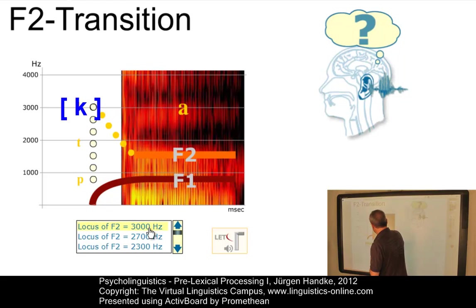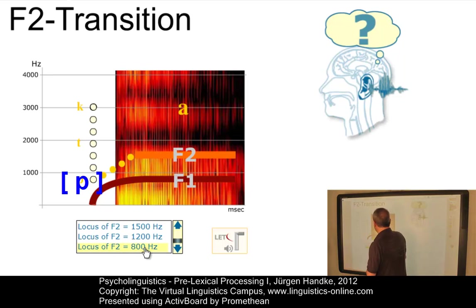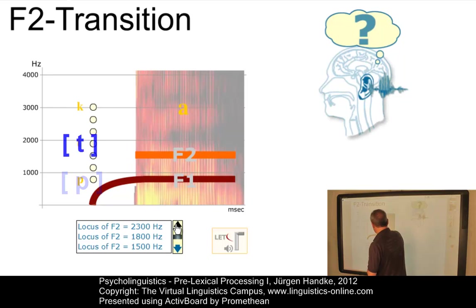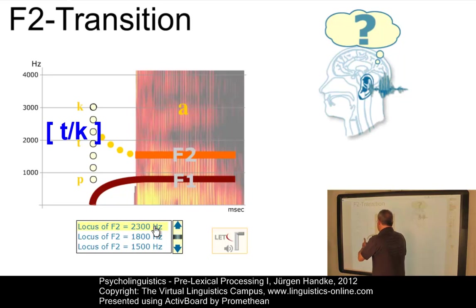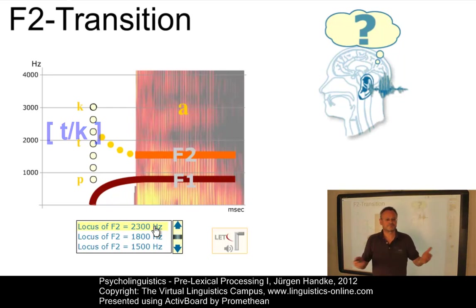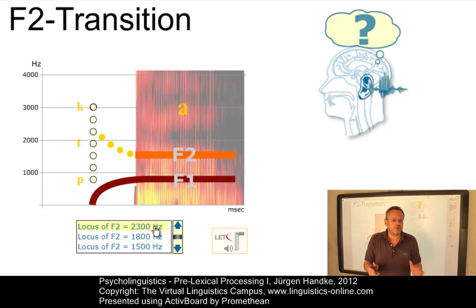A high locus clearly produces Ka, while a very low locus produces Pa, and the middle locus produces Ta. However, at intermediate values between the loci for T and K, we cannot identify the respective consonant. Thus, speech perception is sensitive to the locus of F2, and the transition of F2 from the locus to the vowel is an important cue in the perception of speech.